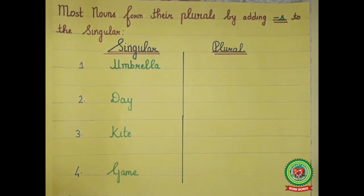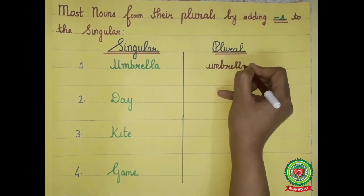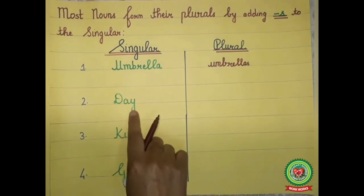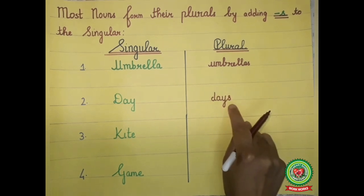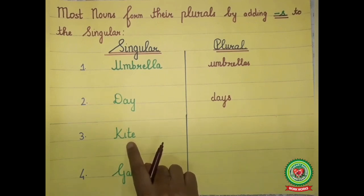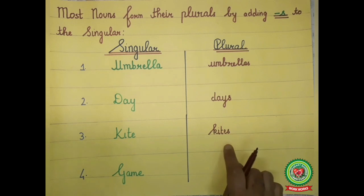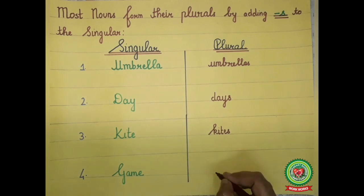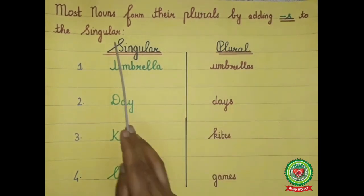Read the first example — umbrella. We will make it plural by adding 's' to it, so the plural noun will be 'umbrellas.' Read the next example — day. We will make it plural by adding 's', so the plural noun will be 'days.' Read the next one — kite. We will make it plural by adding 's', so the plural noun will be 'kites.' Read the next one — game. We will make it plural by adding 's', so the plural noun will be 'games.' To repeat: most nouns form their plurals by adding 's' to the singular.